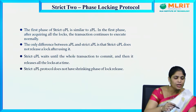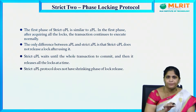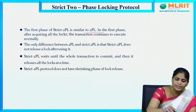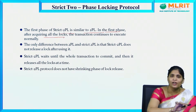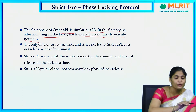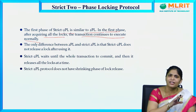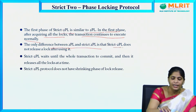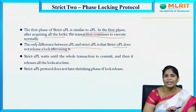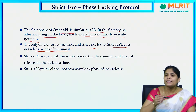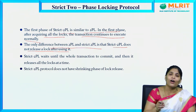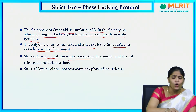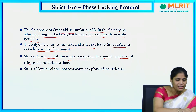The first type is strict 2PL. It is similar to 2PL in its first phase: after acquiring all the locks, the transaction continues to execute normally. The only difference is that strict 2PL does not release a lock after using it — step-by-step releasing is not done. Instead, strict 2PL waits until the whole transaction commits and then releases all locks at once.